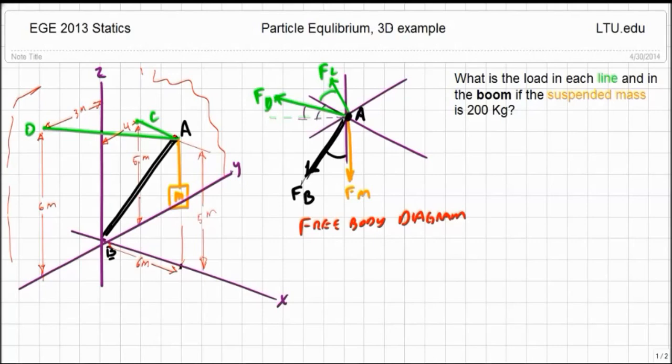Because if we look at our original diagram, we have, for example, a position vector from point A to point C that it doesn't go anywhere in the Z direction. In the Y direction, it goes a plus four meters. X direction, it goes a minus six meters, because this point here is six meters out.